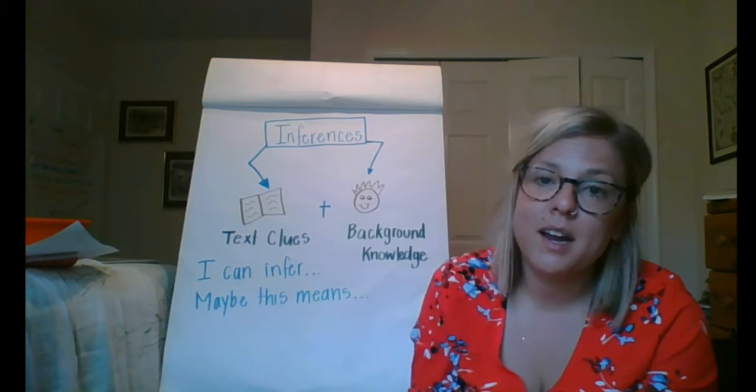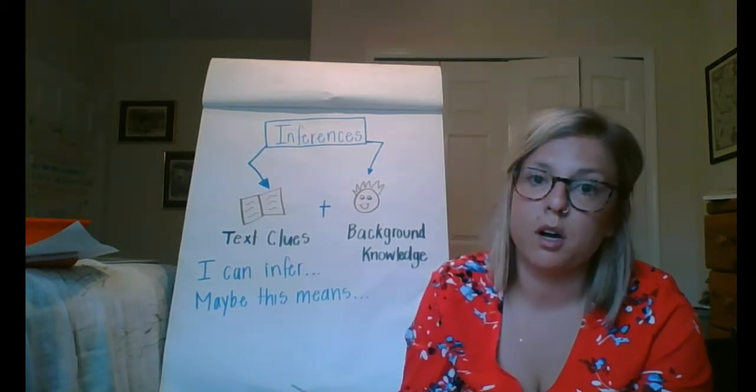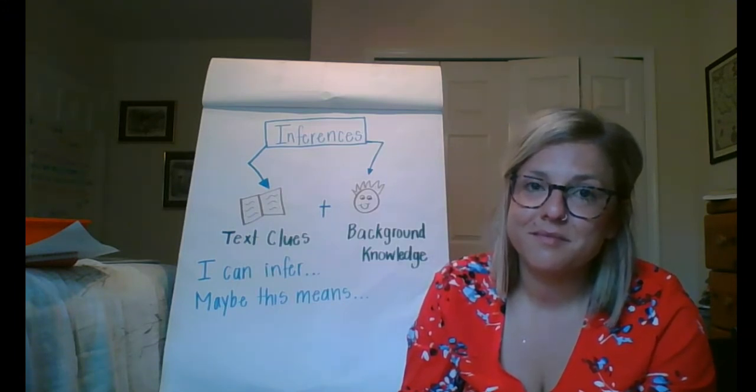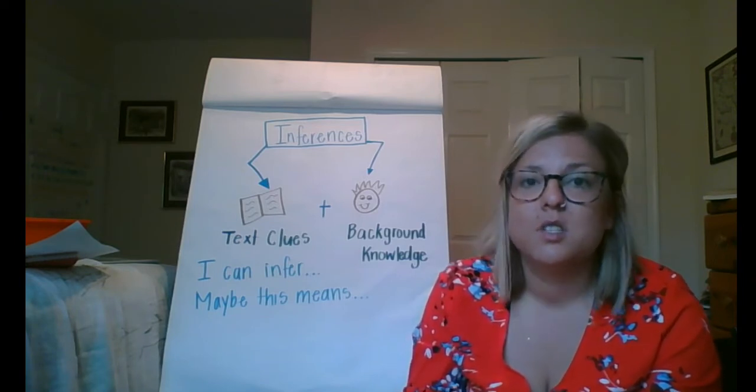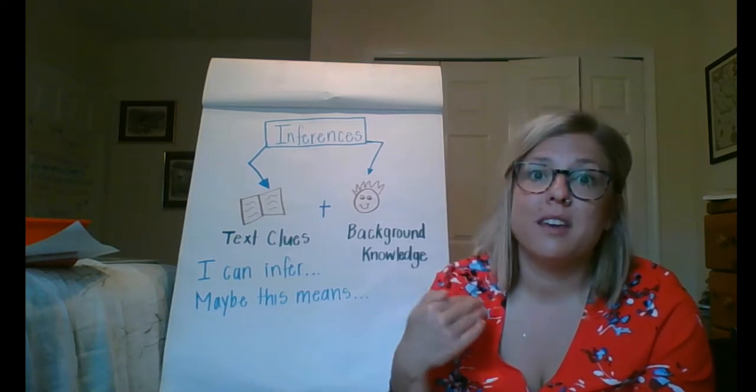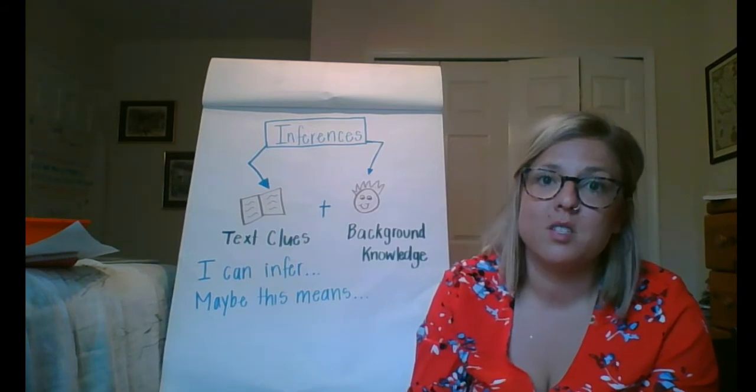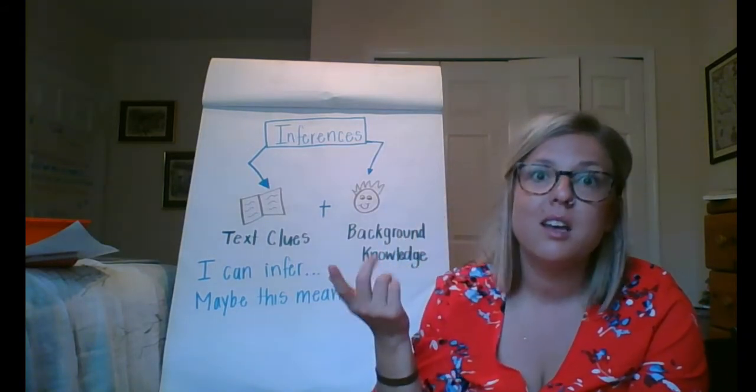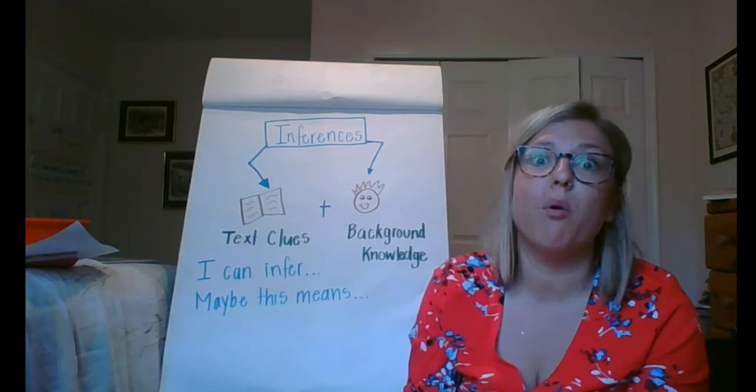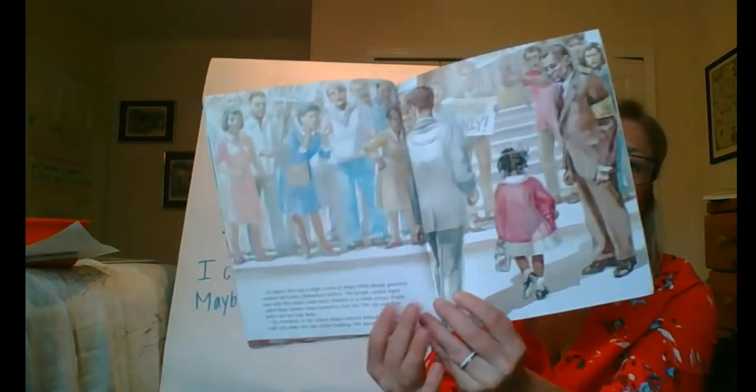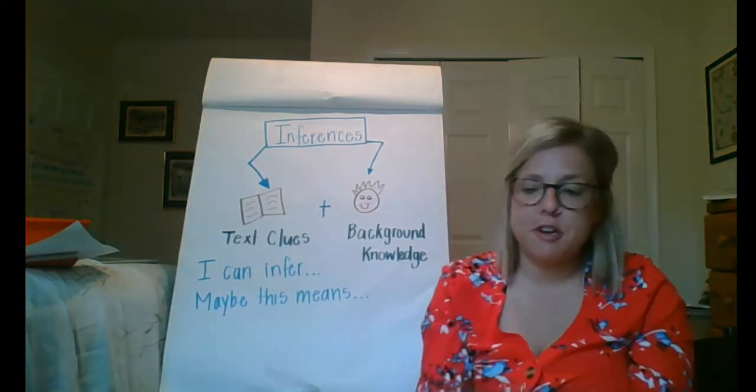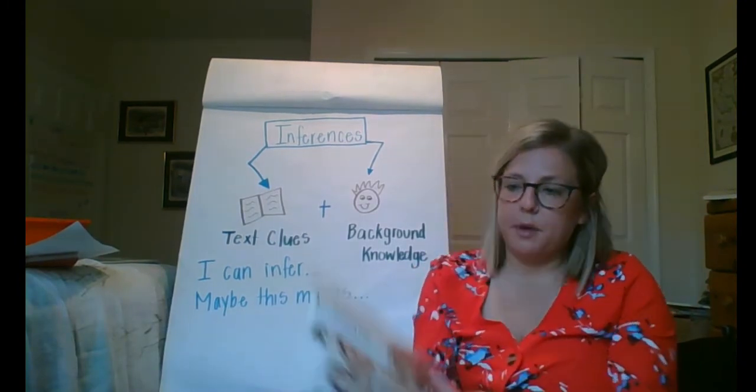Now we're going to make an inference right now and I want you to think about why the marshals were there to walk Ruby into school. You're right. They were there to protect her. So we took the word marshal, which I'm sure you didn't know what that word meant, and we knew that they carried guns and that the president ordered them to be there. So we used our background knowledge to think about why somebody would have a gun, why somebody would be named a marshal, and why the president would be involved. It would obviously be because it would be a very important thing. And Ruby's a little girl, and all of these people are yelling at her. So we just made an inference in that they're there to protect her. Let me go ahead and show you this picture.